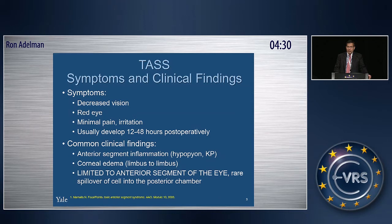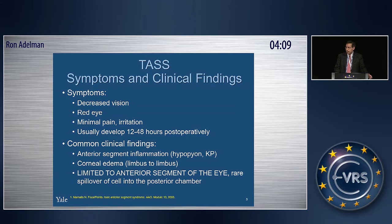Symptoms and signs of TASS are somewhat similar to endophthalmitis. The patient has decreased vision, red eye, minimal pain, and irritation. TASS usually develops 12 to 48 hours after surgery. There is anterior segment inflammation such as hypopyon and keratic precipitates.